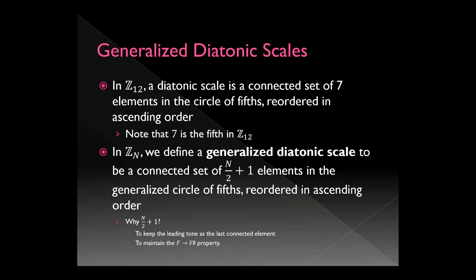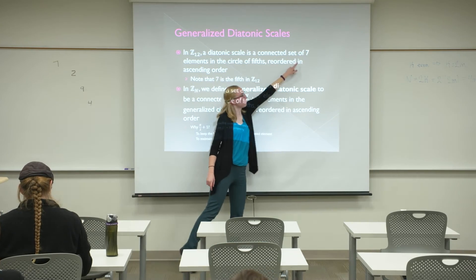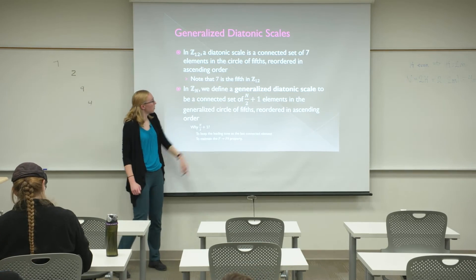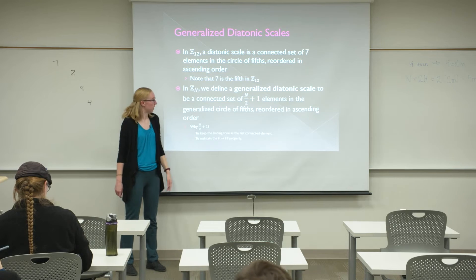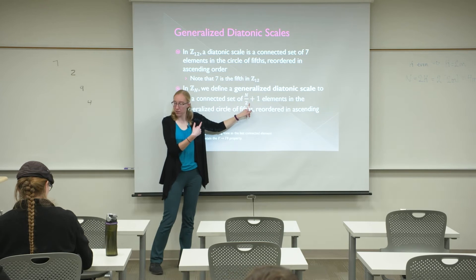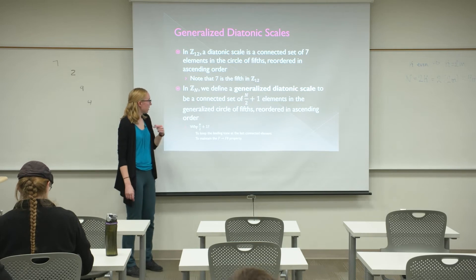Now we generalize scales. In Z12, a diatonic scale is a connected set of seven elements reordered in ascending order — seven is the fifth in Z12. So in ZN, we define a generalized diatonic scale to be a connected set of N/2 + 1 elements — that's the fifth in ZN — from the generalized circle of fifths, reordered in ascending order.